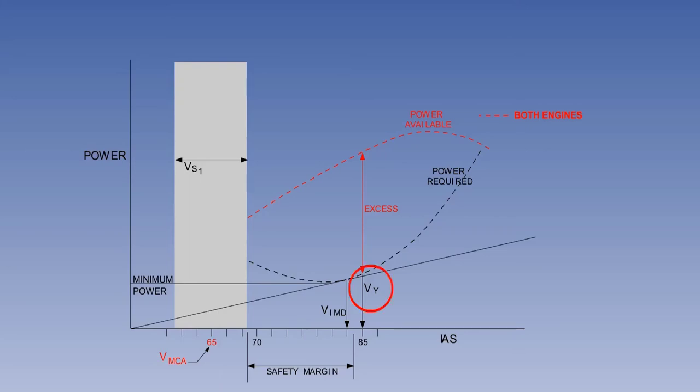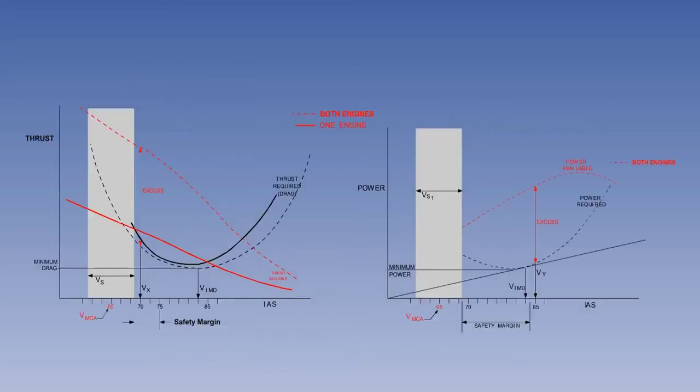The airspeed for best rate of climb is VY for all engines operating and VYSE for best single-engine rate of climb. VY and VYSE are higher than VX and VXSE and provide a safer margin above both stall and VMCA.